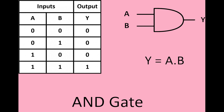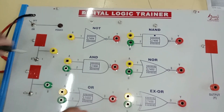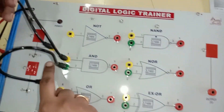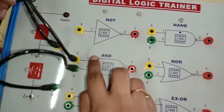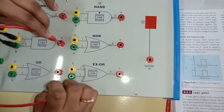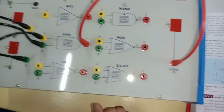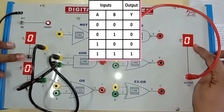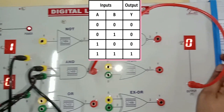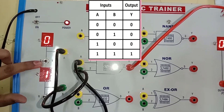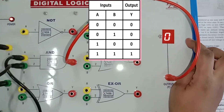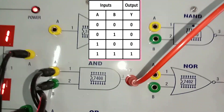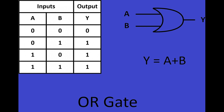Now the AND gate. Here we need 2 inputs. Terminal 1 and 2 are given to the 2 inputs A and B. From terminal 3, the output is taken. Now turn on the kit. With input 0,0 the output is 0. With input 1,0 the output is 0. With input 0,1 the output is 0. With input 1,1 the output is 1. Thus the truth table of AND gate is verified.